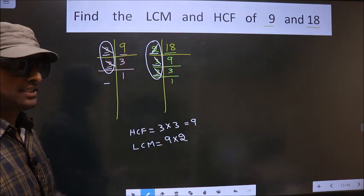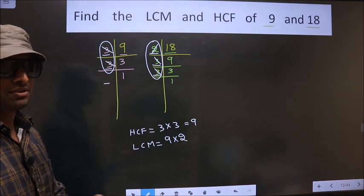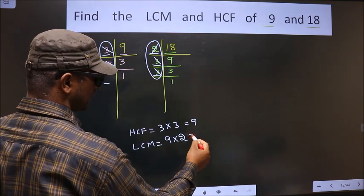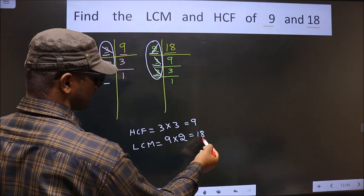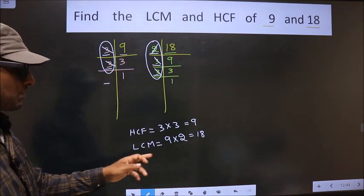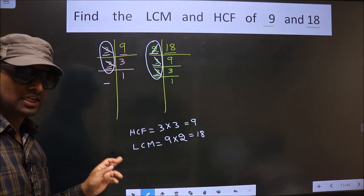Therefore, you multiply these numbers. Whatever number you get, that is your LCM. So 9 times 2 is 18. So this is our LCM and this is our HCF. Am I clear?